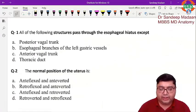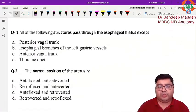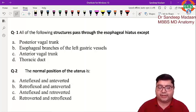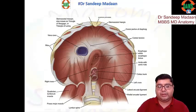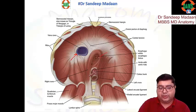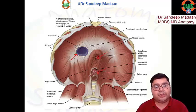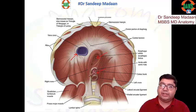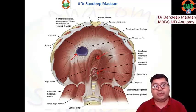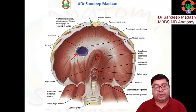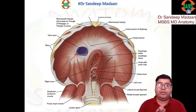Let us discuss CBT question number one: all of the following structures pass through the esophageal hiatus except. In the diaphragm we have three openings — the IVC opening, esophageal opening, and aortic opening. Through the IVC opening, the IVC and the right phrenic nerve pass. For the esophageal opening, the esophagus, vagus nerve, and a branch of the left gastric artery pass.